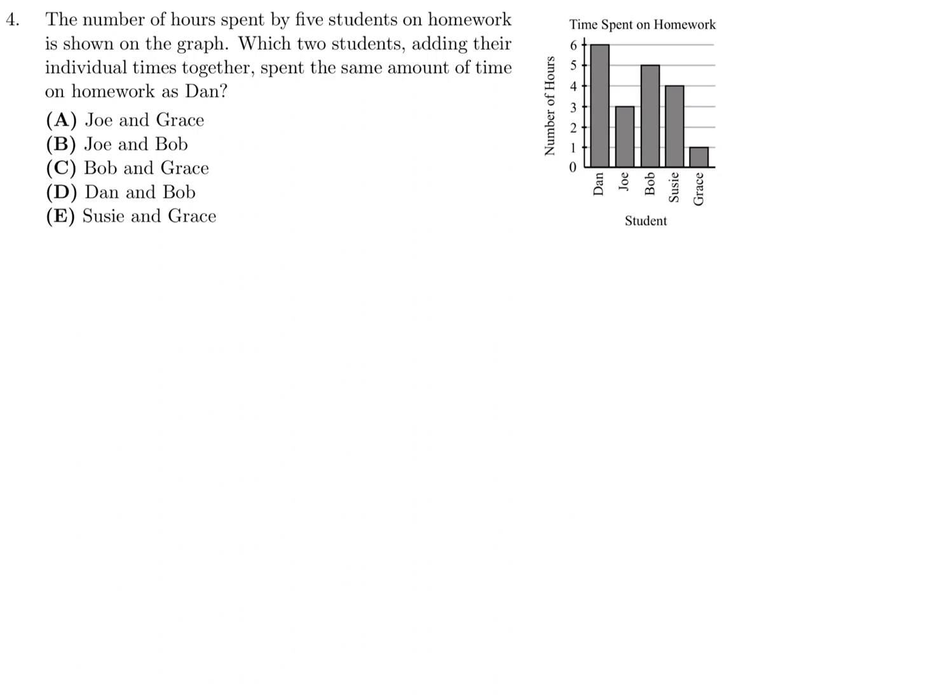The number of hours spent by 5 students on homework is shown on the graph. Which 2 students, adding their individual times together, spent the same amount of time on homework as Dan? Dan spends, according to the graph, 6 hours. So we have to find 2 students who, if you add the amount of time each of them spent, equals 6 hours. And looking at the graph, Bob spent 5 hours, and Grace spent 1 hour. So 5 plus 1 is indeed equal to 6, and therefore, those would be the 2 students we are looking for. So number 4, it's Bob and Grace, and that is choice C.